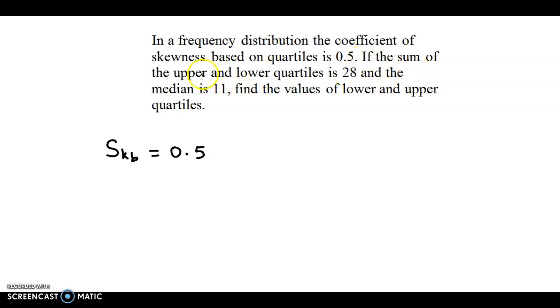Next, if the sum of upper and lower quartiles is 28, that is Q3 plus Q1 equals 28, and the median is 11, find the values of lower and upper quartile. That is, Q1 and Q3 we need to find.